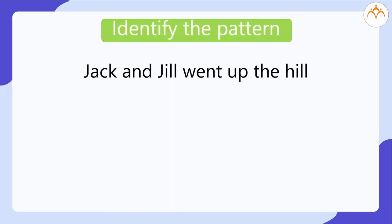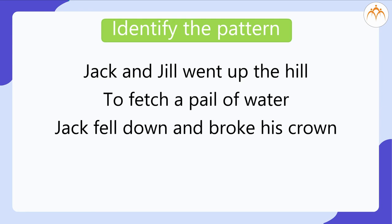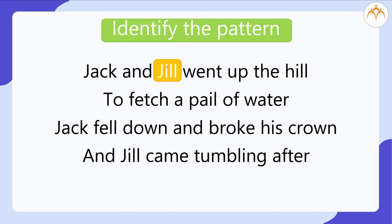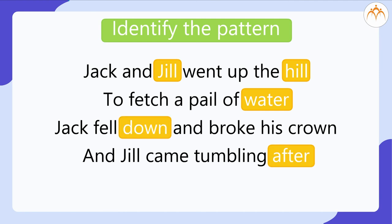Identify the pattern. Jack and Jill went up the hill to fetch a pail of water. Jack fell down and broke his crown and Jill came tumbling after. What do you observe? The pattern is Jill, hill, water, after, down.